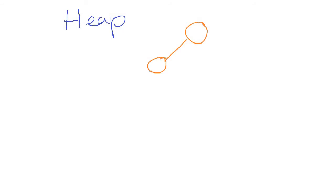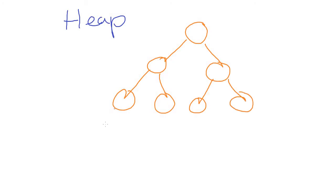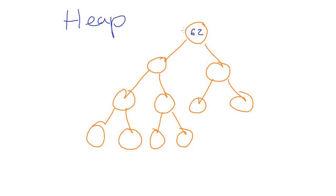So how does a heap work? It's actually a type of binary tree, where we have nodes with zero, one, or two children. Heaps have different rules entirely than binary search trees do. In a binary search tree, everything to the left of a node must be less and everything to the right must be greater. For heaps that is no longer true — heaps instead have different rules.